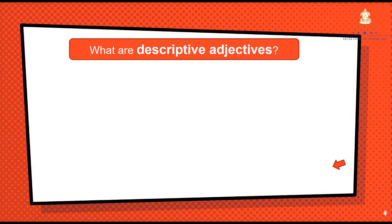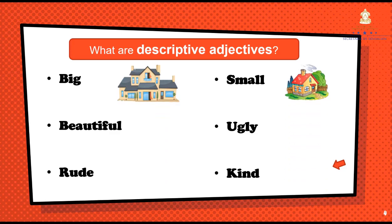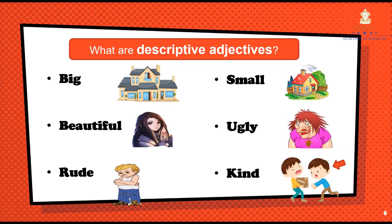¿Qué son los adjetivos descriptivos? Look at some examples. Observa estos ejemplos. Big — Grande. Small — Pequeña. Beautiful — Bonita o bonito. Ugly — Feo o fea. Rude — Grosero. Kind — Amable. Repeat after me.